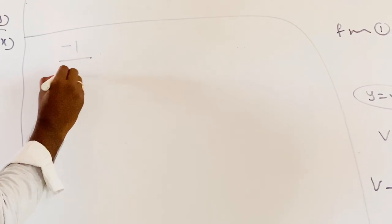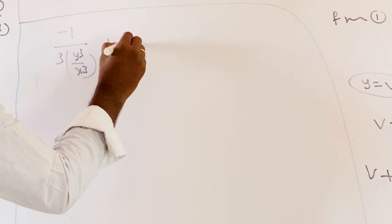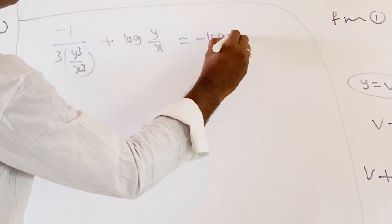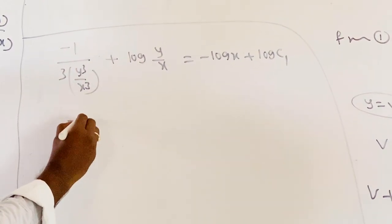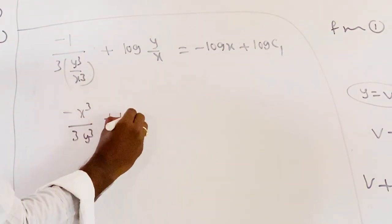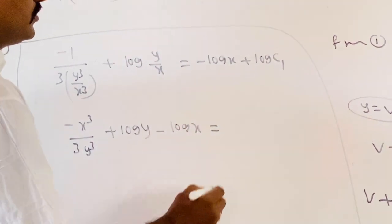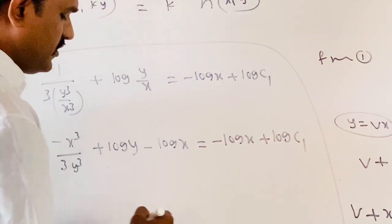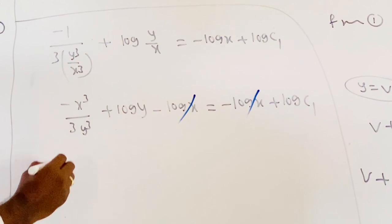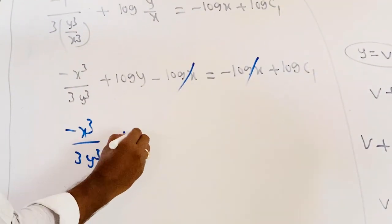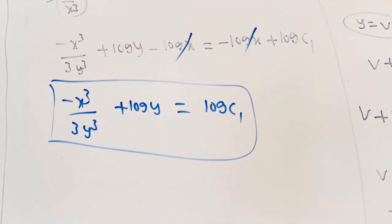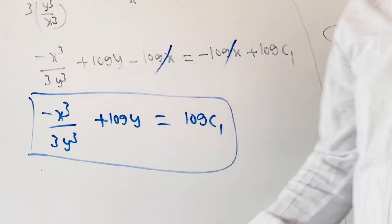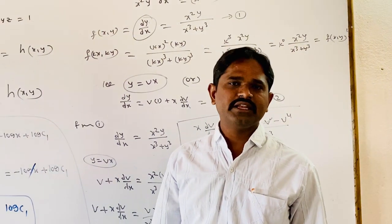Simplifying: −x³/(3y³) + log y − log x = −log x + log c₁. The log x terms cancel, giving the final solution: −x³/(3y³) + log y = log c₁. This is the solution of the homogeneous differential equation. Next, we will discuss non-homogeneous and linear equations. Thank you.